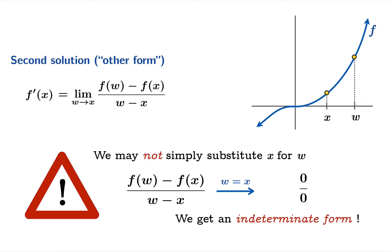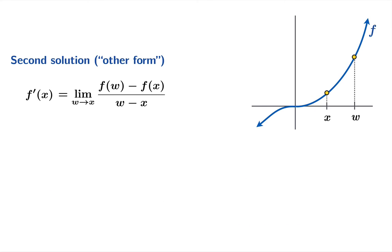So quite generally it's always the case that when you set up one of these derivatives from scratch using a limit of secant slopes it's not going to yield to a simple substitution immediately. You got to do some work. Now in this case the cubing function allows us to substitute these expressions for f of w and f of x.